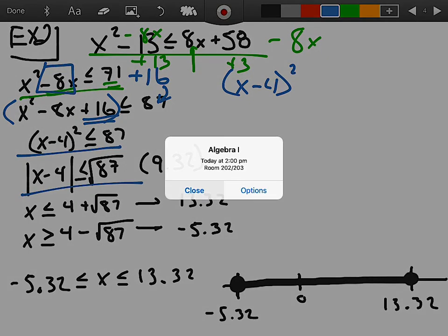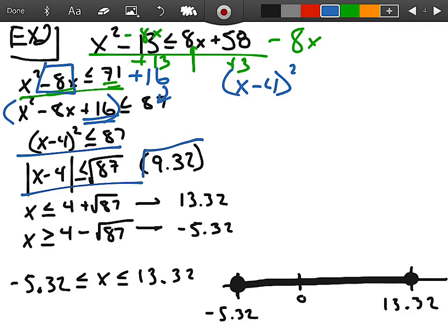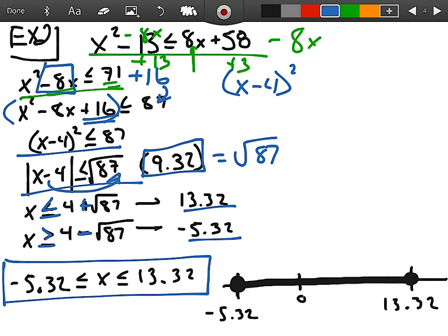And by the way, 9.32 is the square root of 87. Then, I move my 4 over to both sides and I split my equations into the original less than a positive square root of 87, and now, the additional greater than or equal to negative square root of 87. This will generate two points and those two points I graph based on the solution of my inequality.